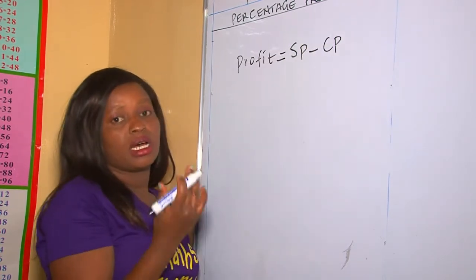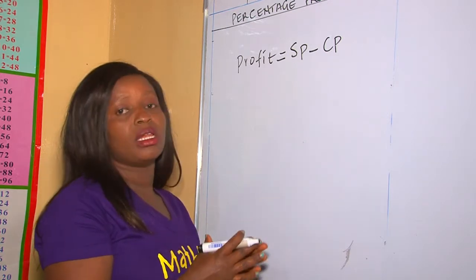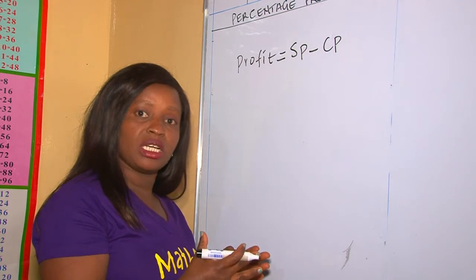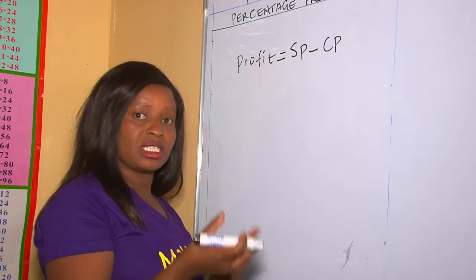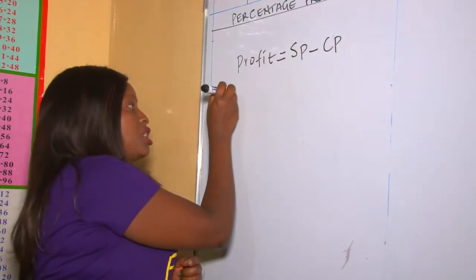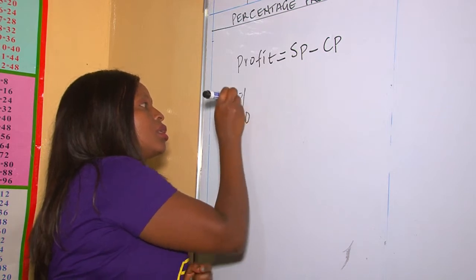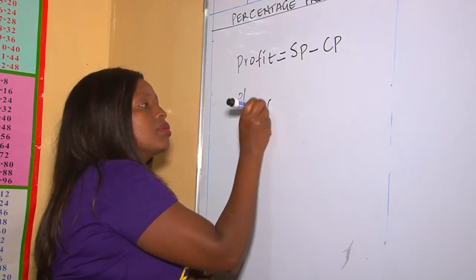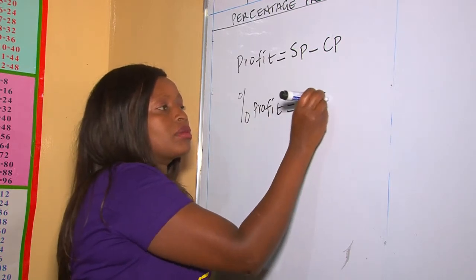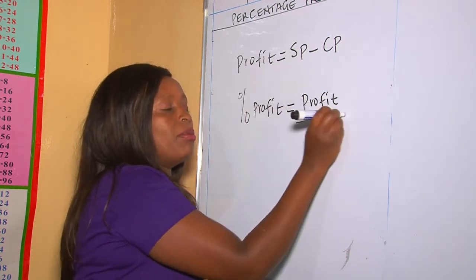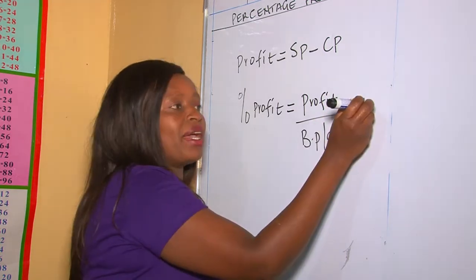This cost price, as we learned, can be the buying price. It can also mean the total expenditures that you incur when trying to do a business transaction. Therefore, the percentage profit equals profit over the buying price or cost price, divided by a hundred.